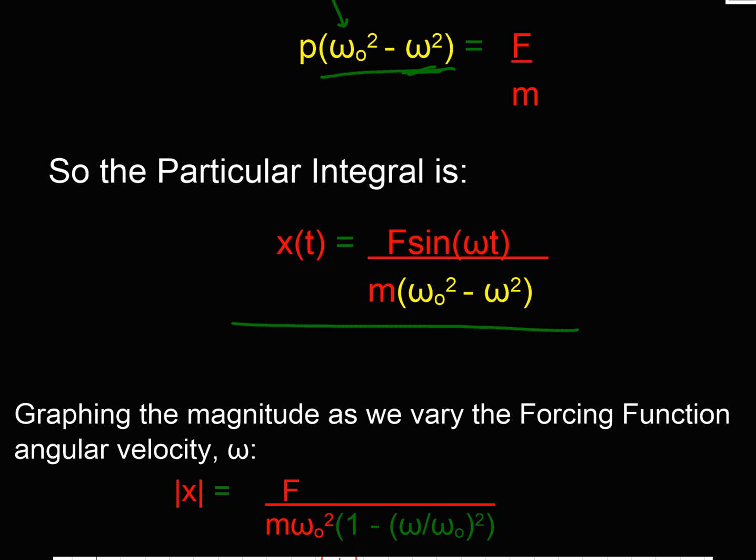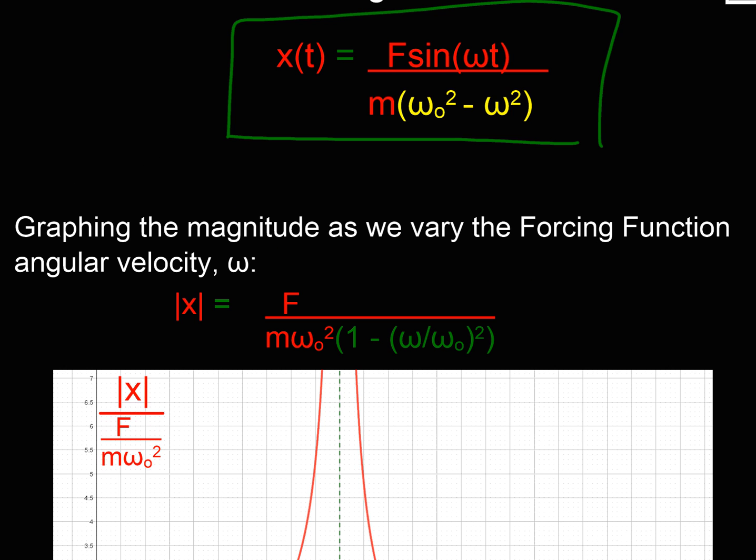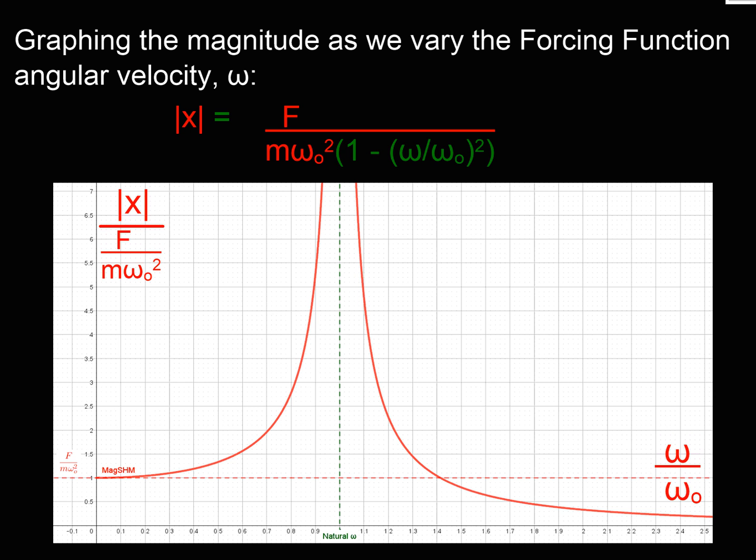If I sub that into my particular integral, I get one in this form. In order to graph this, I'm going to take out my ω₀². I'm going to non-dimensionalize my graph by taking x and dividing it by that. Let's look because this is the only bit that varies with angular frequency. That's what I'm going to graph - ω over ω₀.